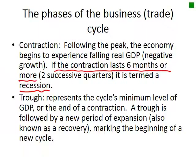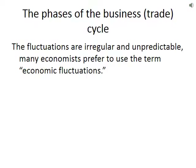The trough is the cycle's minimum level of GDP, or the end of a contraction. A trough is followed by a new period of expansion, also known as a recovery, marking the beginning of a new cycle. The phases of the business or trade cycle are irregular and unpredictable, and many economists prefer to use the term economic fluctuations.